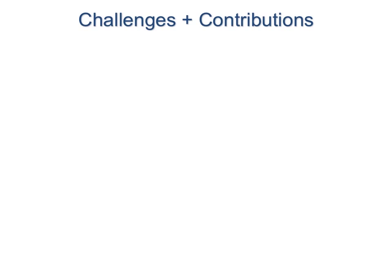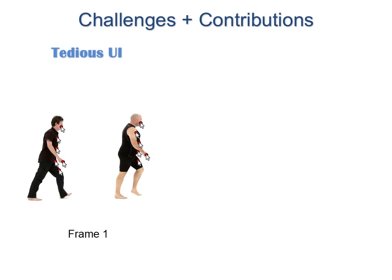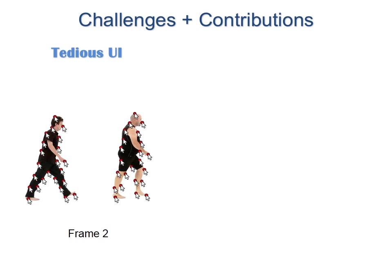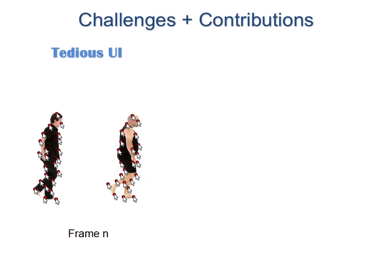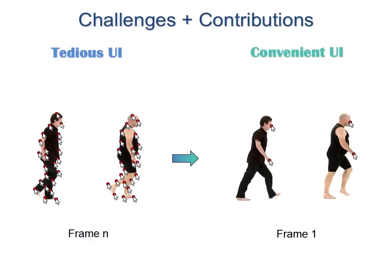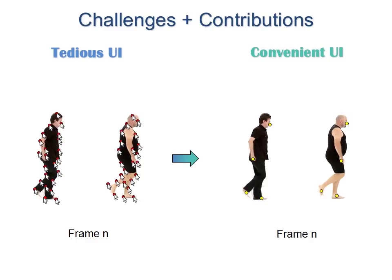Finally, it is important to allow the user to properly specify matching correspondences between features of the two input videos. A naive approach would require specifying many correspondences on all frames, as shown by the red dots on the left. Our technique leverages structural similarity to reduce the number of specified correspondences, and we use optical flow to propagate them across frames where appropriate. The yellow dots on the right are automatically propagated by our approach.